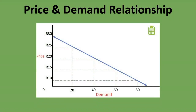Here is the relationship between price and demand — this is what we meant by a linear relationship. There is a straight-line relationship between price and demand. For example, if we charge the highest price of 30 rand, demand is zero. At 25 rand, demand is 20 units. At 20 rand, demand is 40 units. With every 5 rand change in price, demand changes by a constant 20 units — that is the linear assumption.